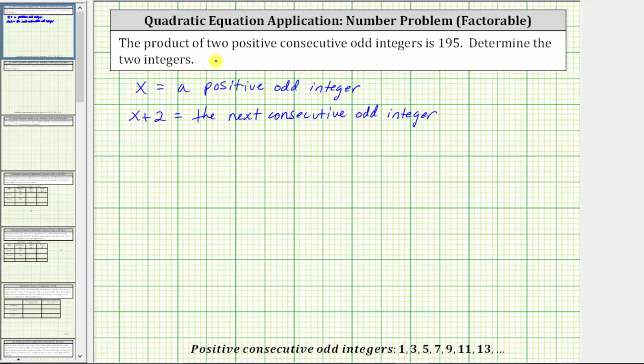Because we are given the product of the two positive consecutive odd integers is 195, we can answer the question by setting up and solving the equation x times the quantity x plus two equals 195.